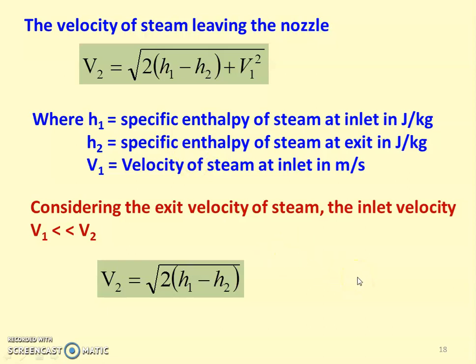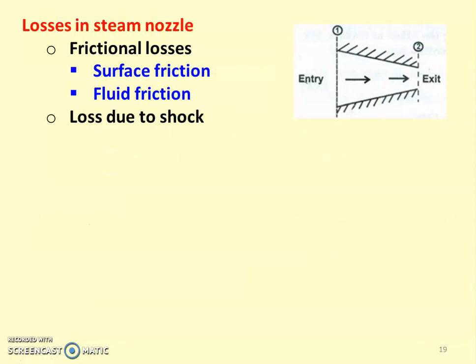We assumed isentropic (reversible adiabatic) flow in the earlier derivation. Adiabatic flow can be achieved by insulating the nozzle to prevent heat transfer with the surroundings. However, achieving a reversible process is very difficult — in practice it is not possible, because there are losses in the nozzle.